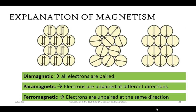We have three terms in explaining magnetism. First, we have diamagnetic, where all electrons are paired. Paramagnetic, where electrons are unpaired at different directions. And ferromagnetic, where electrons are unpaired at the same direction. So what are the differences between these three substances?